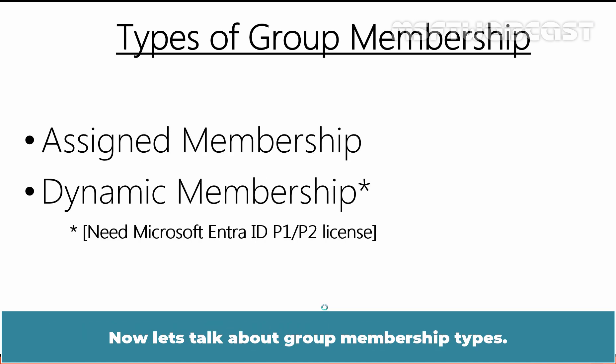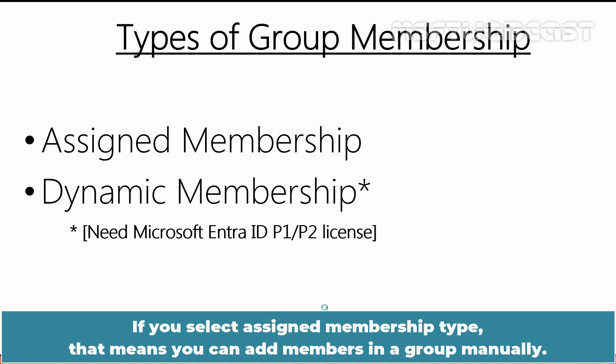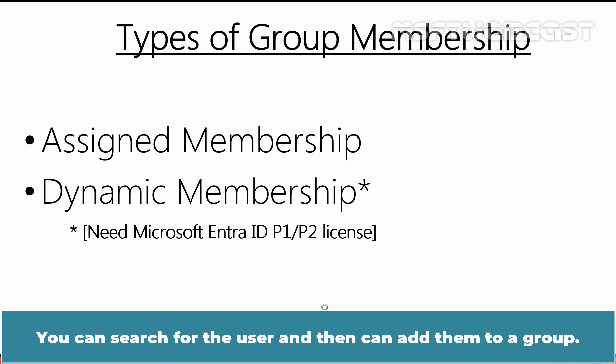Both users and admins can create Microsoft 365 groups within Microsoft Entra ID. Now let's talk about Group Membership Types. Under the Membership Type field, you will see three options. If you select Assigned Membership Type, that means you can add members in a group manually — you can search for the user and then add them to a group.